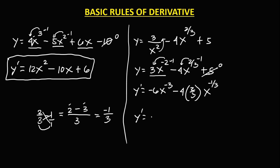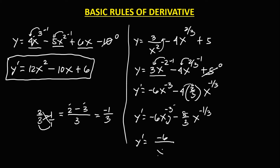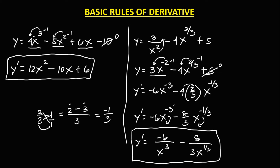Then simplifying: we have negative 6x to the power negative 3, minus 8 over 3 times x to the power negative 1 over 3. To make the exponents positive, bring them down: y prime equals negative 6 over x to the power 3, minus 8 over 3x to the power 1 over 3. This is the derivative.